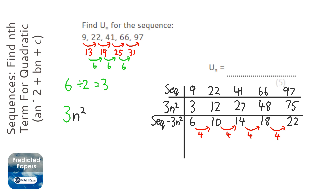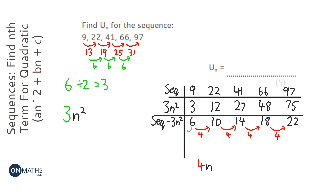And we find the nth term of this linear sequence. So we're going to have 4n, and then we're going to work out what the 0th term is, and that's going to be 2. So our 0th term is going to be 2, so we know it's going to be 4n plus 2.